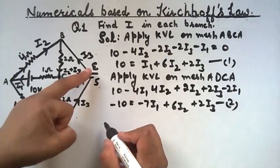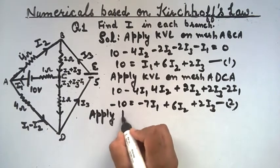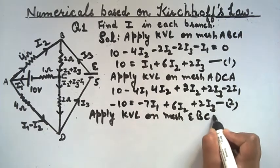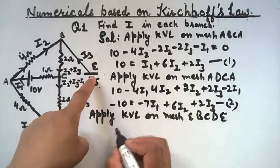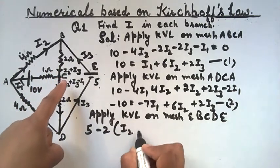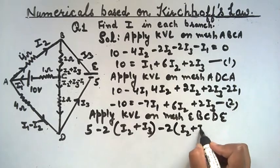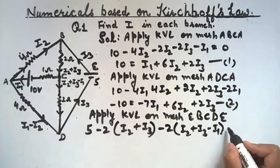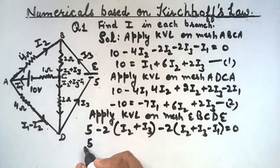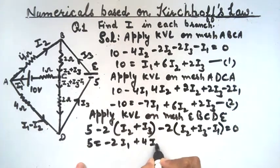Now apply KVL on mesh EBCDE. Voltage will be positive here. Then: minus 2(I2 + I3), minus 2(I2 + I3), minus I1 equals zero. When solved, the final equation is: minus 5 equals minus 2I1 plus 4I2 plus 4I3. This is equation number 3.